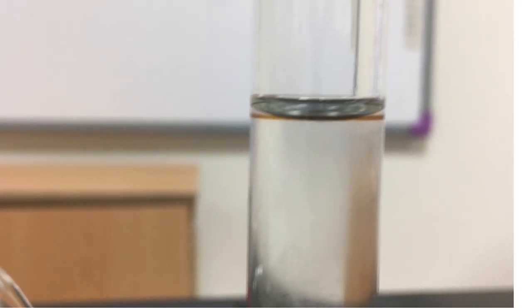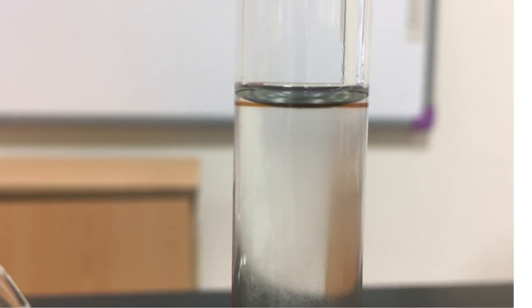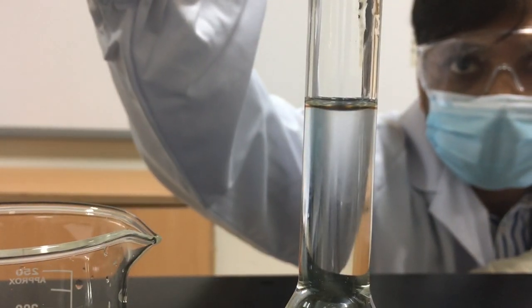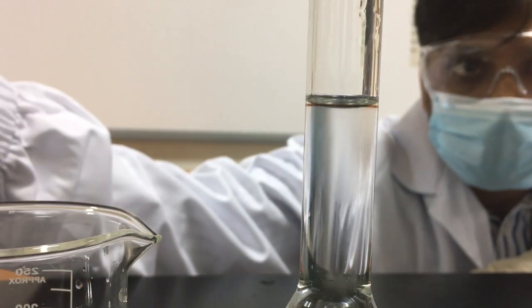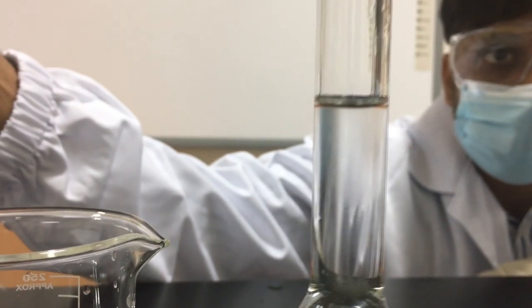The narrow diameter of the neck makes the meniscus clearly shown, and just one drop will change the level of the liquid. Look how the scientist set his eye level at the bottom of the meniscus to have an accurate reading.